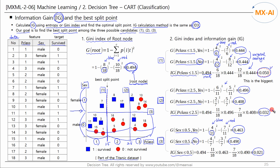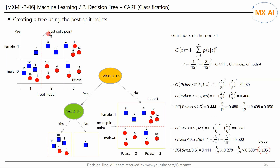We can see that the first candidate has the greatest information gain among the three. It is best to split this root node using this point. This point is called the best split point. Using it, data points with PCLASS less than 1.5 are assigned to the left node, and data points with PCLASS greater than 1.5 are assigned to the right node.